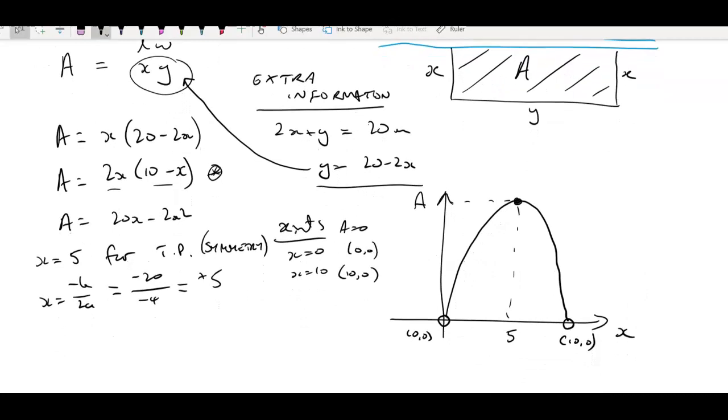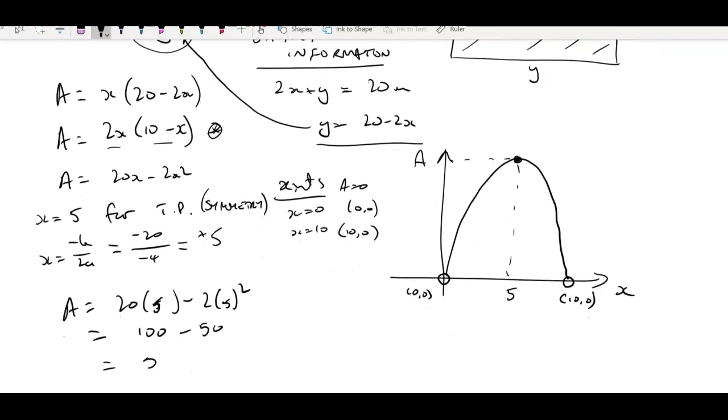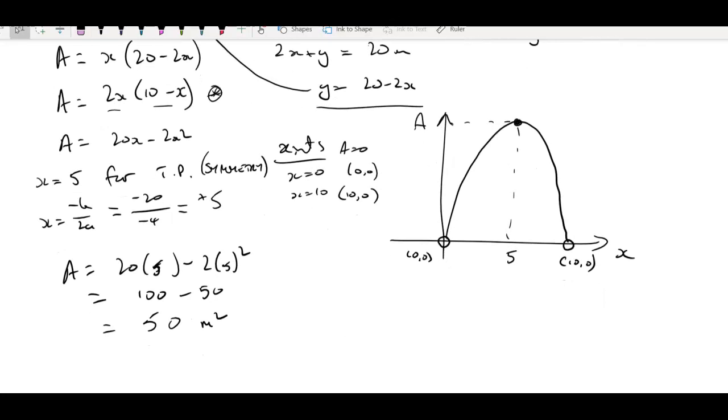What would the area be at plus 5? The area is 20 times 5 minus 2 times 5 squared, which is 100 minus 50, which is of course 50. And it's an area and the units were metres, so it's 50 metres squared.